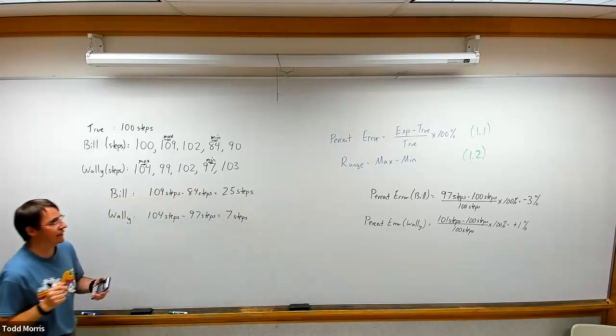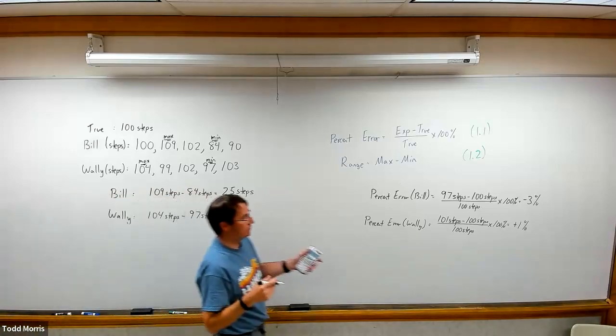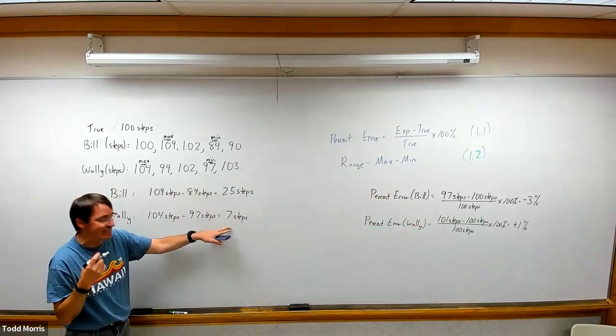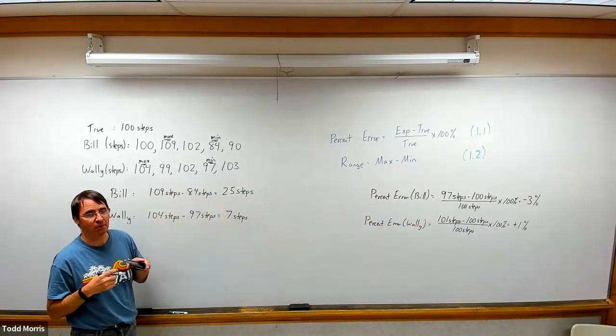And that difference, 104 minus 97, is only seven steps. So not only is Wally's fitness tracker more accurate because it has a lower percent error, it also turns out to be more precise because its range is smaller.